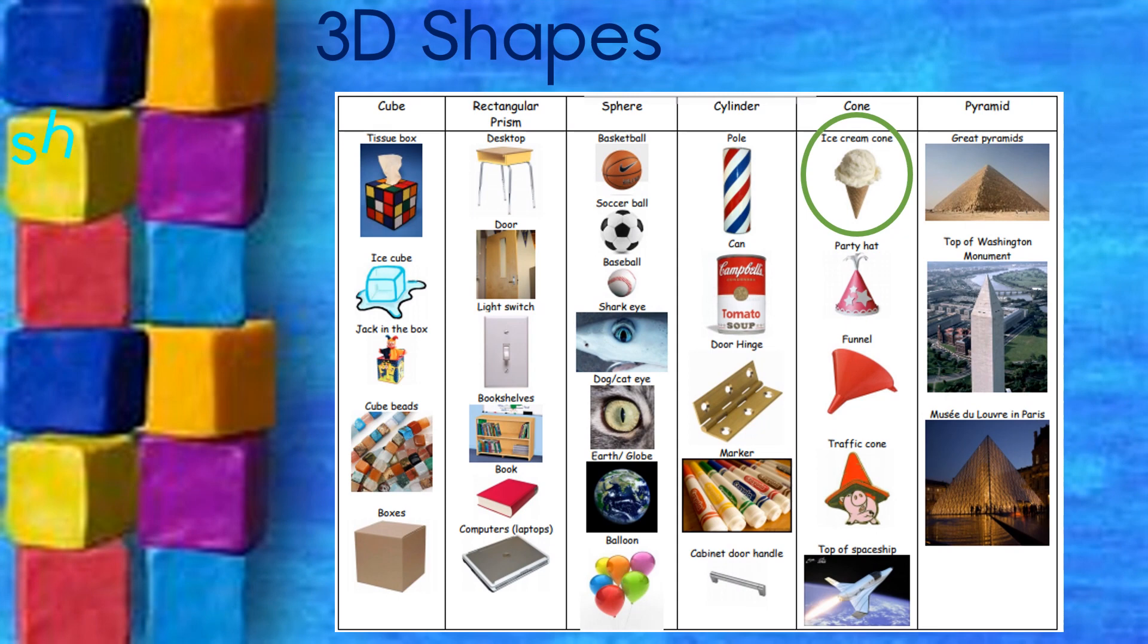We can sort and compare three dimensional objects using these criteria: the shape, the colour, the size, and whether it rolls or slides.